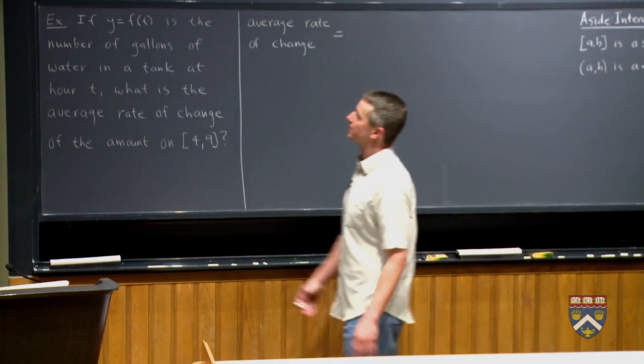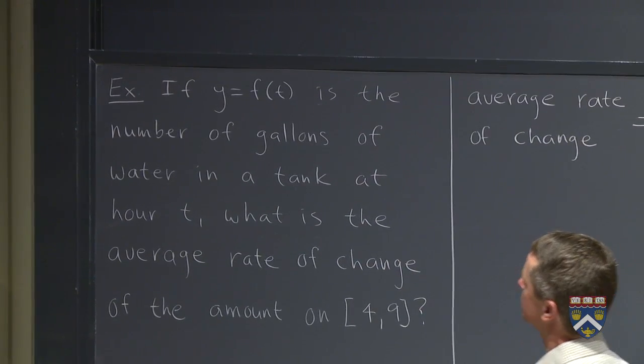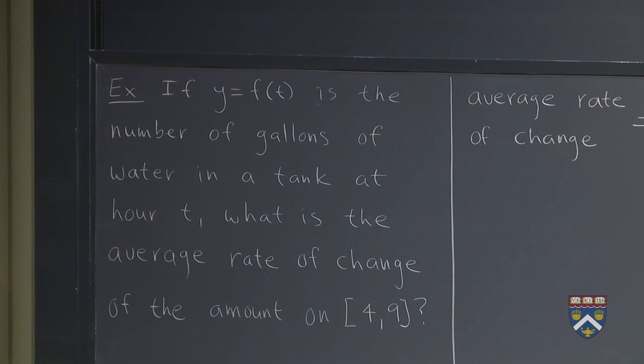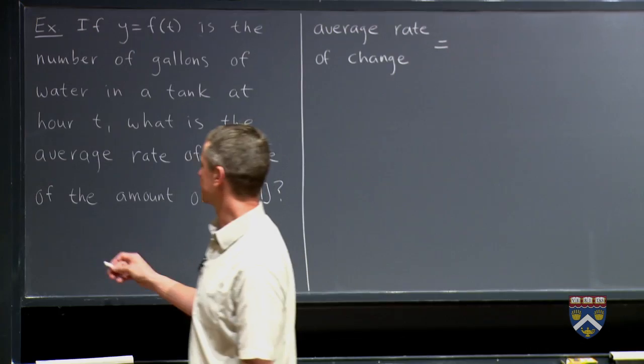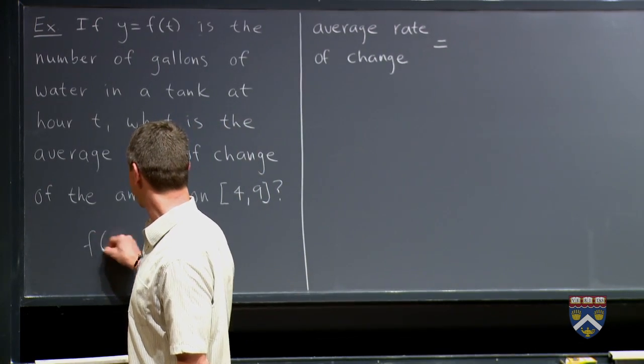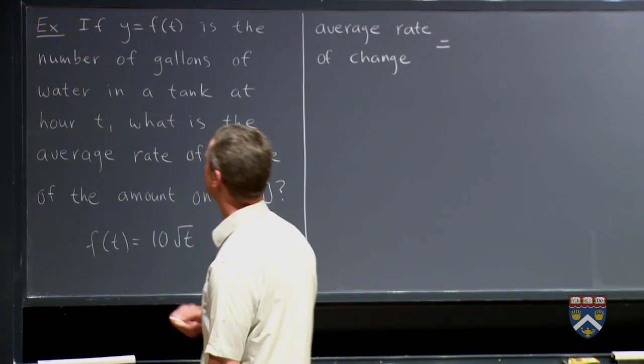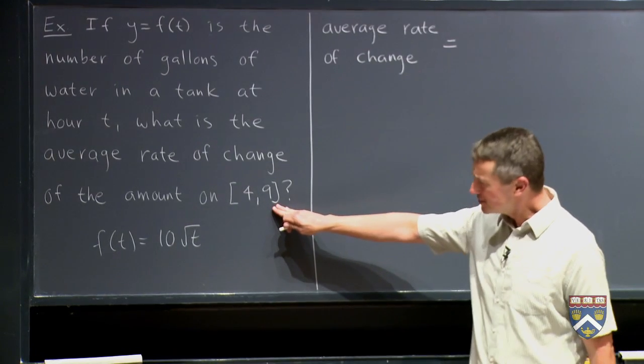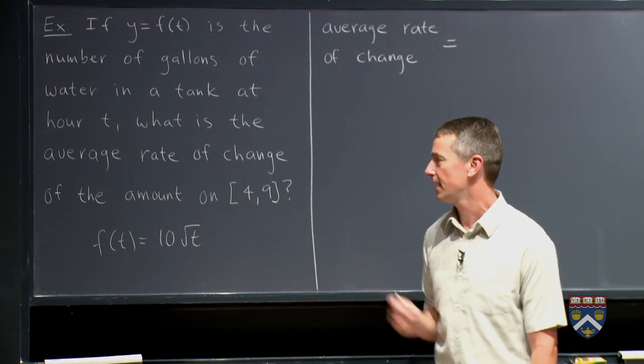So let's suppose that we have a function that is the number of gallons of water in a tank at time t in hours. What is the average rate of change of this amount on the interval from 4 to 9? I suppose we should give you what the formula for the function is here. It was supposed to be f of t equals 10 square root of t. This notation, if you haven't seen it before, is called interval notation, this from 4 to 9.